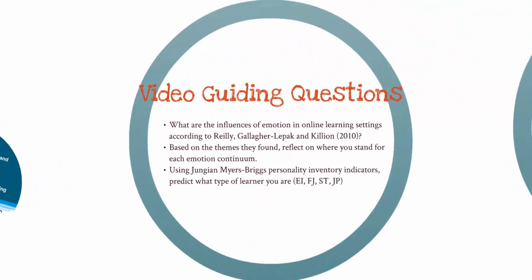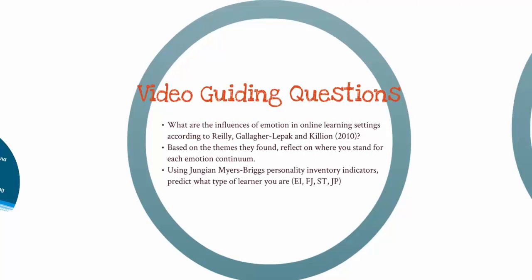Here are the guiding questions for today. What are the influences of emotion in online learning settings, according to Riley, Gallagher-Lepak, and Killian? Based on the themes they found, reflect on where you stand for each emotion continuum. Using Jungian Myers-Briggs' Personality Inventory Indicators, try to predict what type of learner you are.